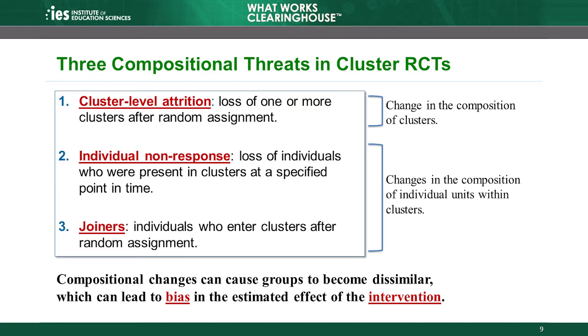Cluster RCTs also face threats to the composition of the initial sample. To think through these threats, we'll keep in mind an example. Consider a study that randomly assigns classrooms to conditions and examines the effect of the intervention on the achievement of students in those classrooms. First, this study may experience cluster-level attrition, where entire clusters are lost after random assignment. For example, researchers may have been unable to administer an assessment to an entire classroom of students. The WWC considers the excluded classroom to be cluster-level attrition.